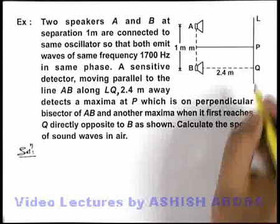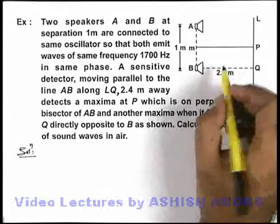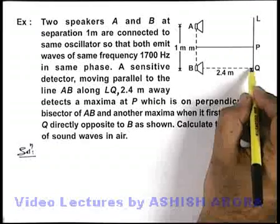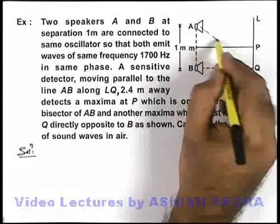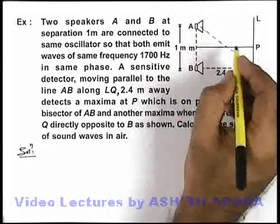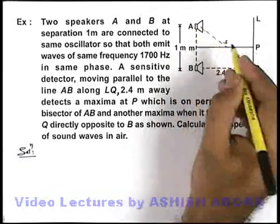In this situation we can say at point Q, the path travelled by the wave from B is 2.4 meter and the path travelled for the wave emitted by speaker A will be, say this is s.